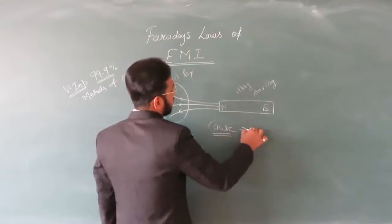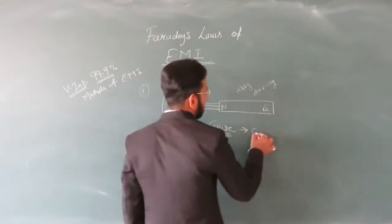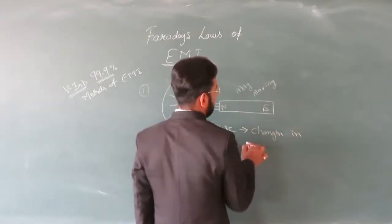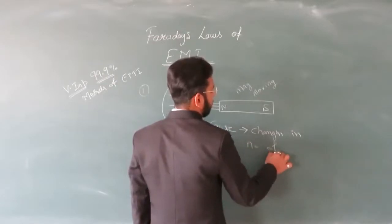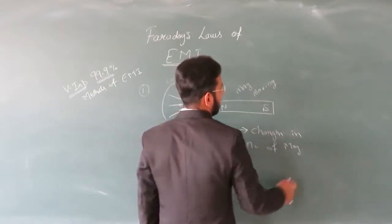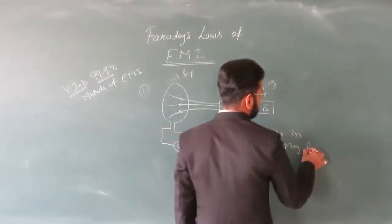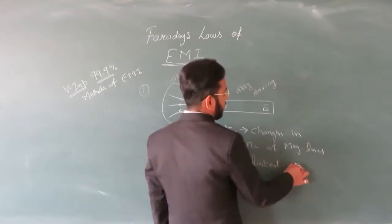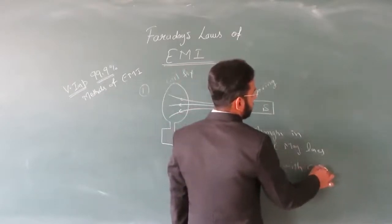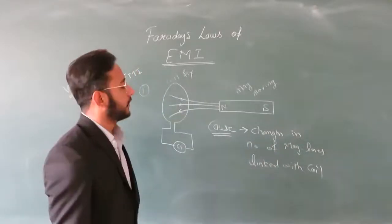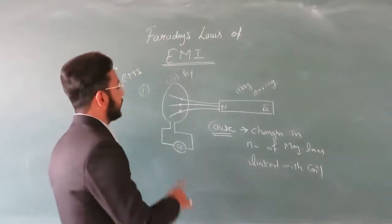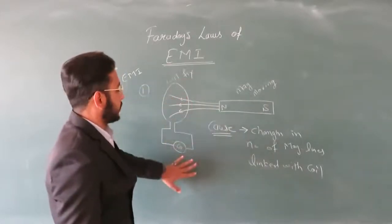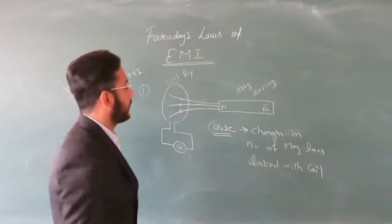The current is changing. When there is a change in the number of magnetic field lines passing through the coil, an induced current is produced. The changing magnetic field lines result in electromagnetic induction.